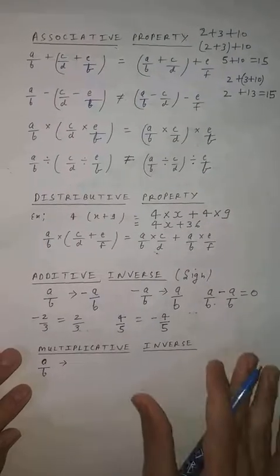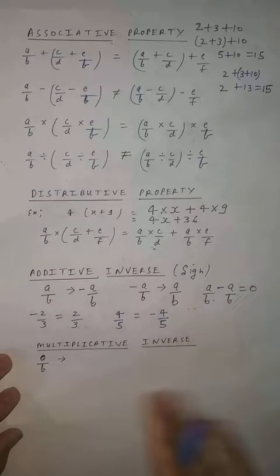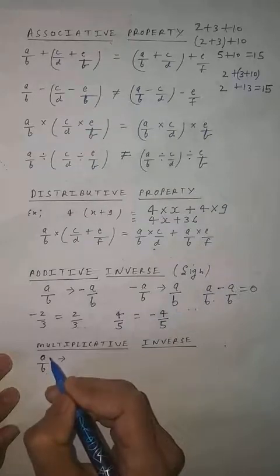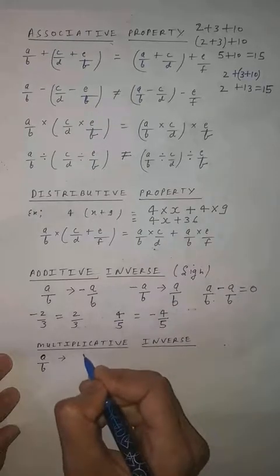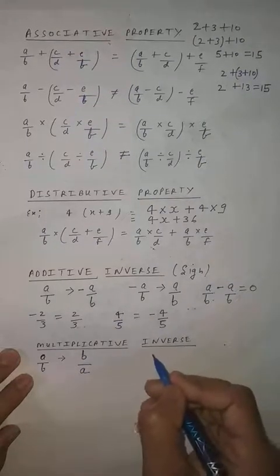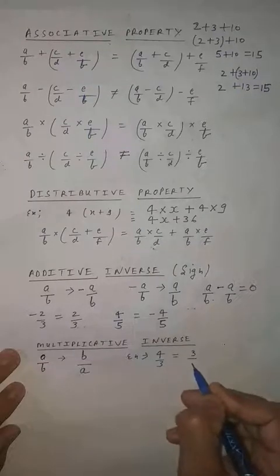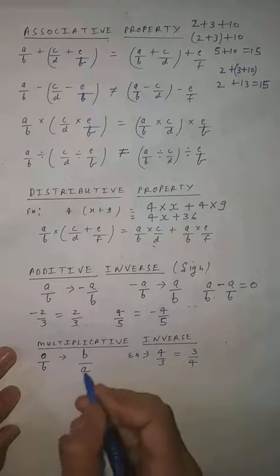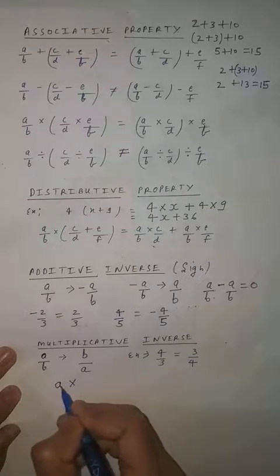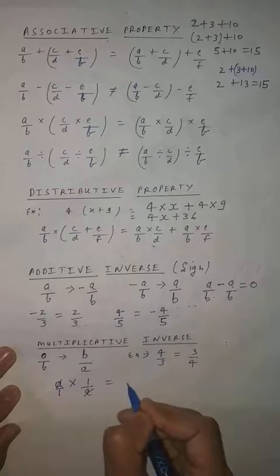Now next is multiplicative inverse. Additive inverse means you have to change the sign. Here, multiplicative inverse means you have to change the numerator and denominator. If you have to find the multiplicative inverse of a by b — where a is numerator and b is denominator — you will write b by a. For example, the multiplicative inverse of 4 by 3 is 3 by 4. It means if a is any number, a multiplied by its multiplicative inverse 1 by a always gives 1. This is your property.